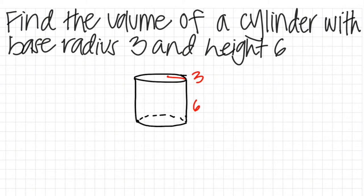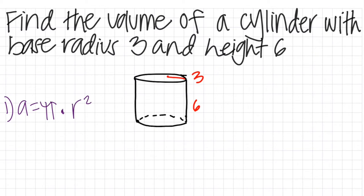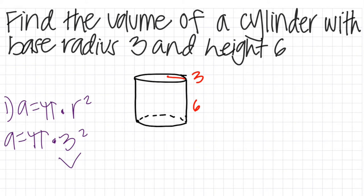The last problem is to find the volume of the cylinder with base radius 3 and height 6. First, we find the area of the circle using the formula A equals pi multiplied by r to the power of 2. Plugging in our numbers gives A equals pi multiplied by 3 to the power of 2, and 3 squared equals 9, so the area is 9π.